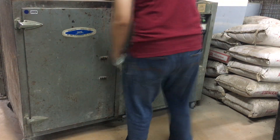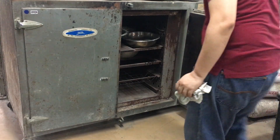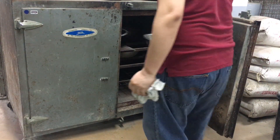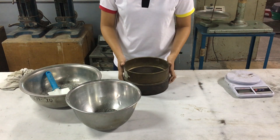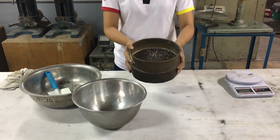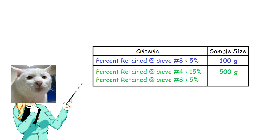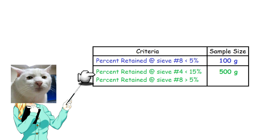Before testing, prepare the sample by oven drying the sand at 105 degrees Celsius for 24 hours. To determine the sample size needed for testing, first sieve 100g of sand in a No. 8 sieve. If the aggregate has at least 95% passing a No. 8 sieve, the sample size is 100g. If the aggregate has more than 5% retained on a No. 8 sieve, the sample size is 500g.